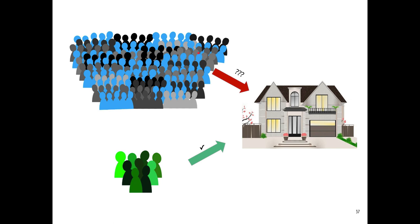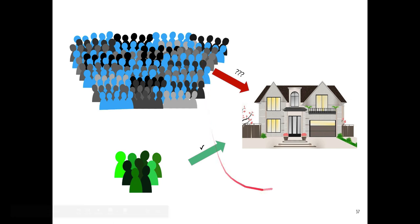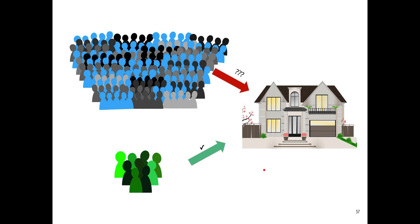Compaction relocates processes toward the low address of RAM to remove external fragmentation, and the scattered holes are combined into one larger hole. However, memory compaction is costly — while the OS is performing compaction, all active processes must be temporarily suspended, adding delay to all of them. Non-contiguous allocation is the answer to avoiding memory compaction.